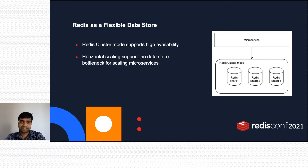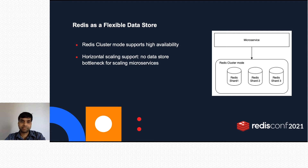Redis as a data store helps to build highly available and scalable microservices. Redis supports failover to a replica to ensure high availability. Often, horizontal scaling of databases is very hard, which limits how much a microservice can scale. However, Redis supports partitioning data into various shards, which enables horizontal scaling.